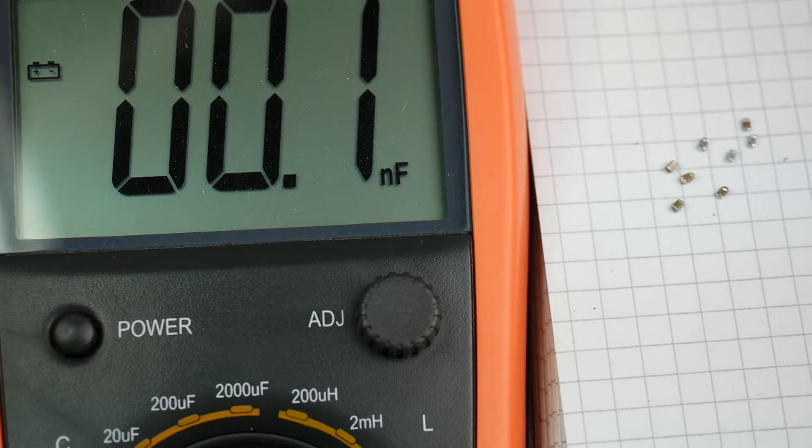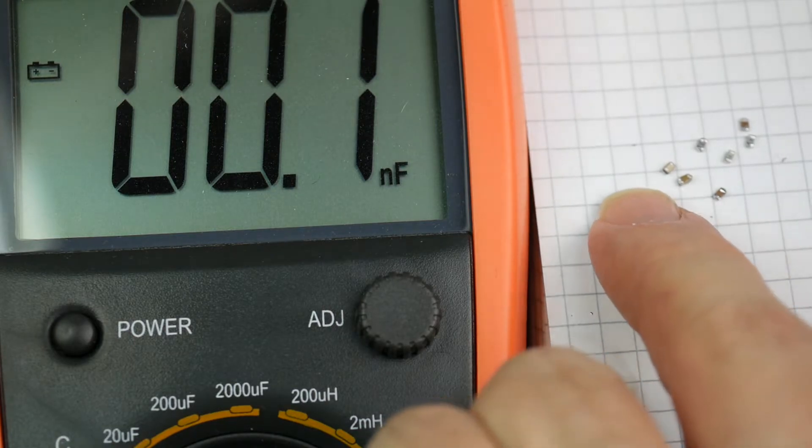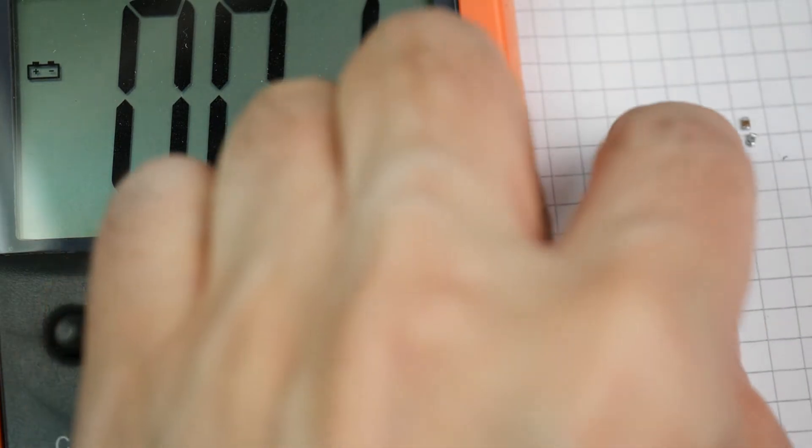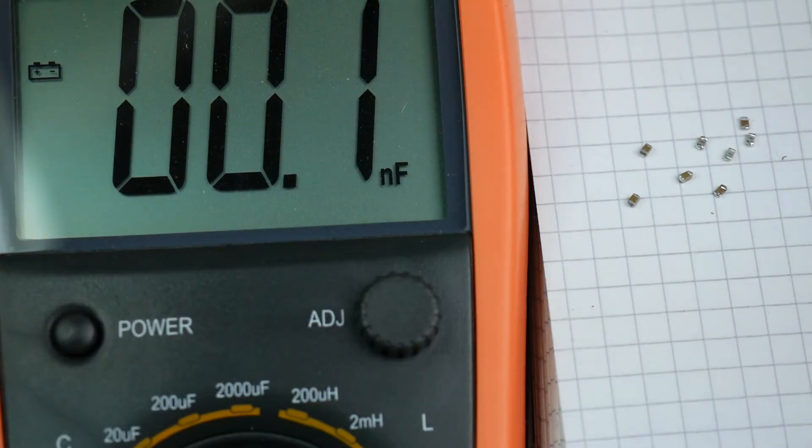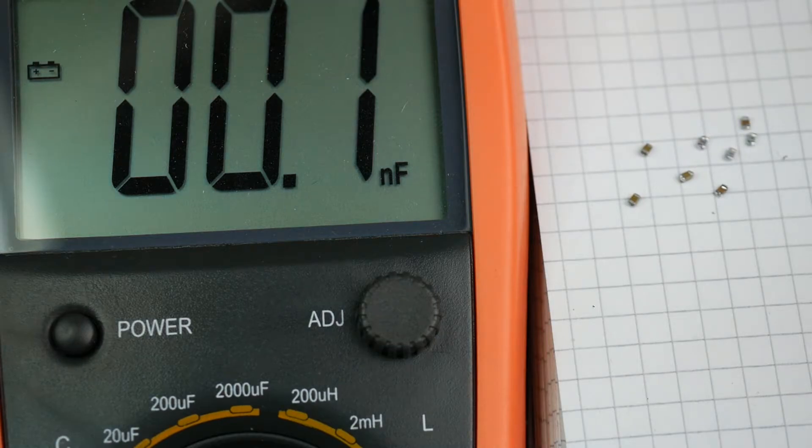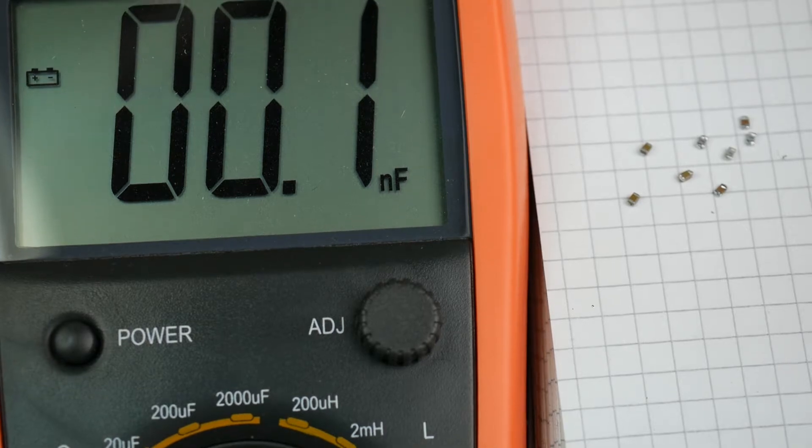These are little tiny surface mount parts that I've just desoldered with the Metcalf Talon on the MX500. I should have said 500 in the other video. They're not marked. Who knows what value they are? Well, this instrument can tell me.